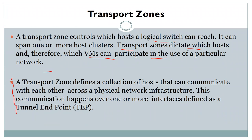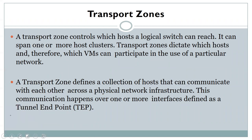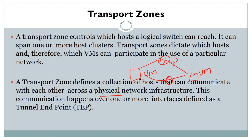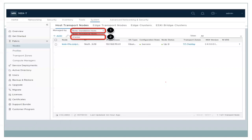Transport zones will provide communication capability for different VMs — logical switching and segmentation. Transport zones also define a collection of hosts that can communicate across a physical network using tunnel endpoints. Not only the legacy VLAN segments, but transport zones provide communication over separated VMs with respect to physical network infrastructure — creating tunnels between VMs with GENEVE encapsulation within the fabric.